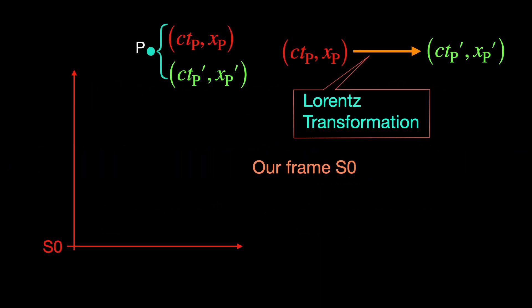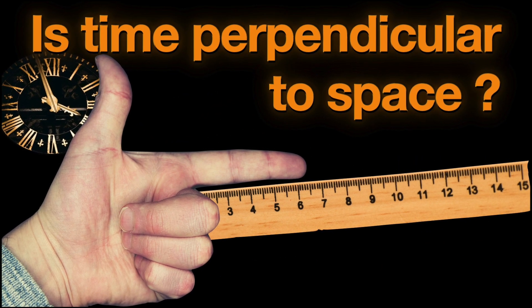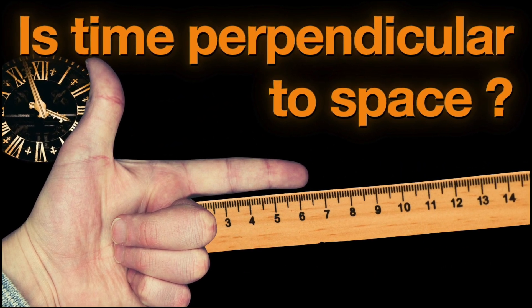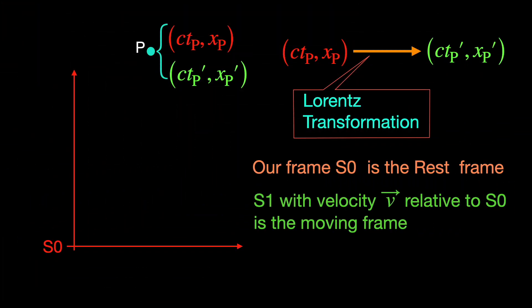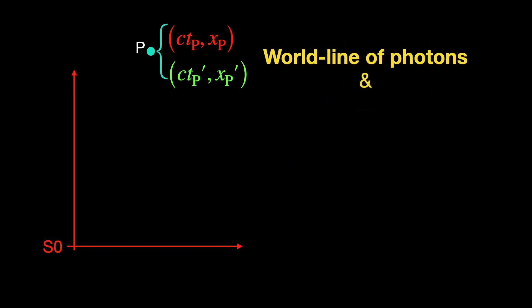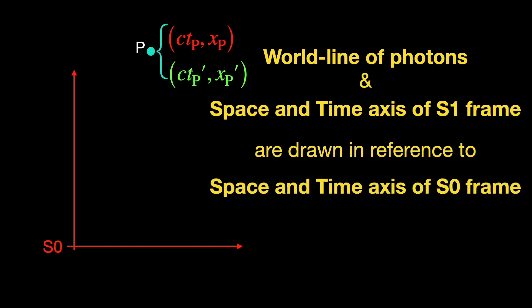Since we are the ones drawing the space-time diagram, our frame s0 is the rest frame and we shall refer to s1 as the moving frame. We have discussed why the space and time axis of the rest frame are drawn mutually perpendicular and take up the horizontal and vertical directions respectively in a space-time diagram in our earlier video. This is important because the world lines of photons and the space and time axis of the moving frame are drawn with reference to the space and time axis of the rest frame.